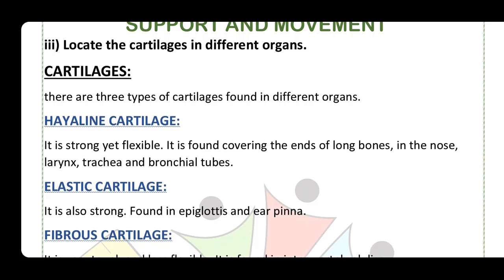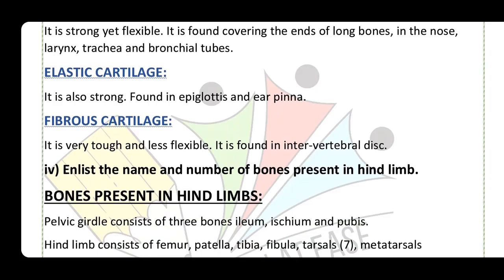Elastic cartilage is also strong and is present in our outer ear and epiglottis. The epiglottis is a covering of the glottis. Fibrous cartilage is very tough and less flexible.